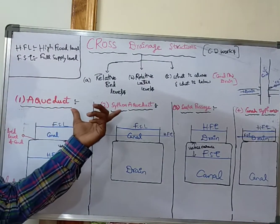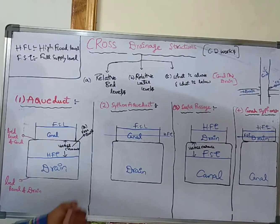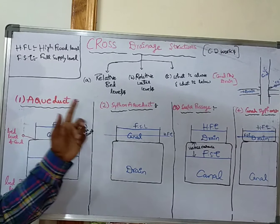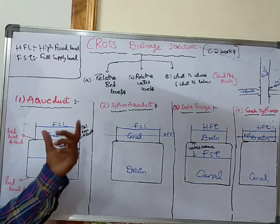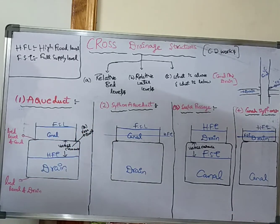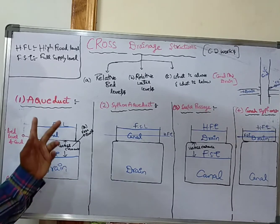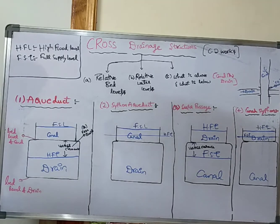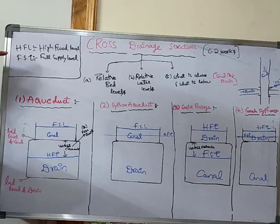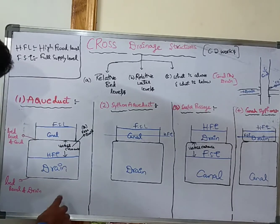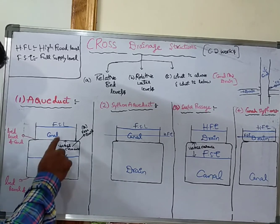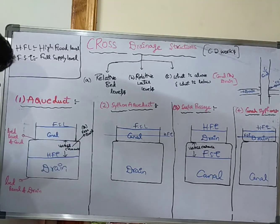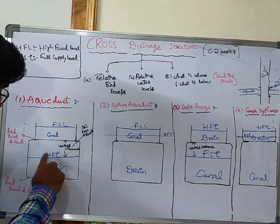In an Aqueduct and Siphon Aqueduct, the drain is flowing below and the canal is flowing above. To differentiate between these two structures, we need to examine two things: the relative water levels — the High Flood Level (HFL) of the drain and the Full Supply Level (FSL) of the canal. You can see the FSL of the canal and the HFL of the drain marked here.